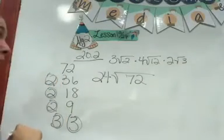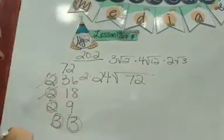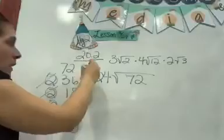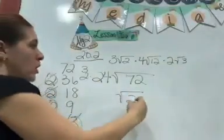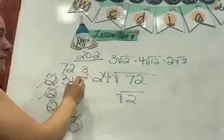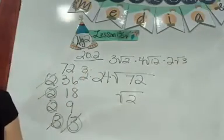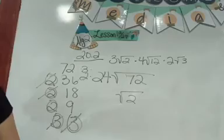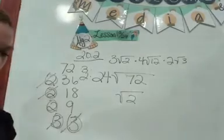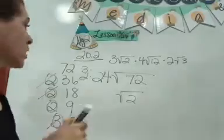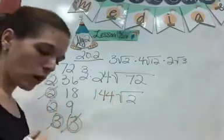What are your pairs? You can take out a 2, and take out a 3, and be left with what for 2? 3 times 2 is 6. 6 times 24 is 144. So your answer is 144 square root 2.